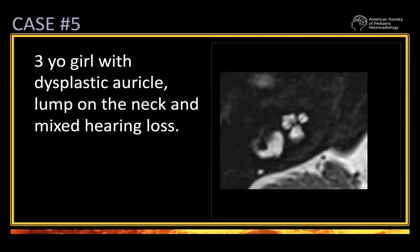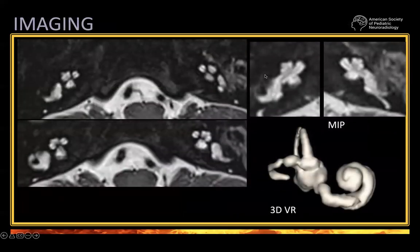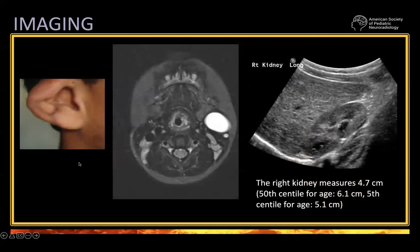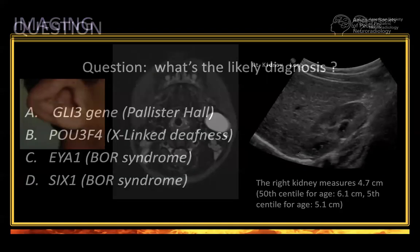Finally, case five: a three-year-old girl with a dysplastic auricle — a strange ear, like in CHARGE — a lump on the neck, and mixed hearing loss. Look at this cochlea: there is the modiolus, the interscalar septum, the spiral lamina. Is something wrong in the apex? There's like an extra spike on the apex. On 3D it shows a bit of abnormality in the apex. The kidney is smaller for age. So you have this association: ear, neck, kidney, and cochlear abnormalities.